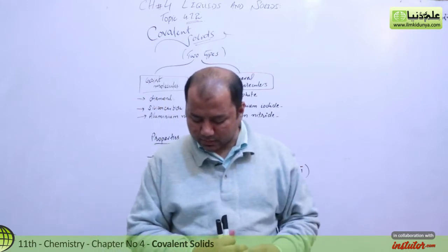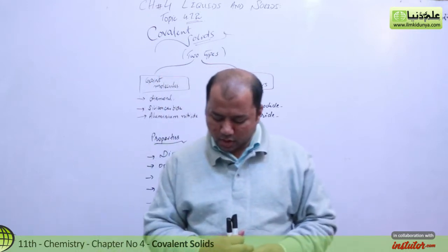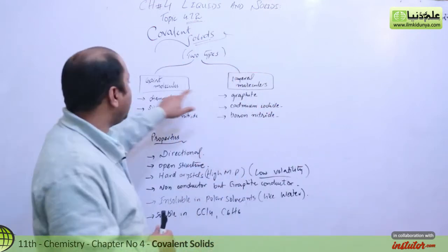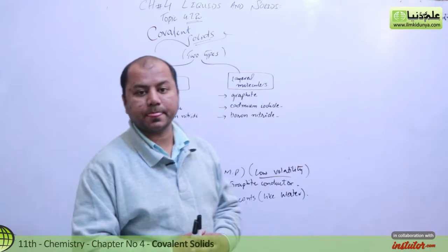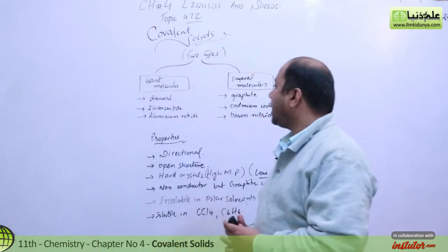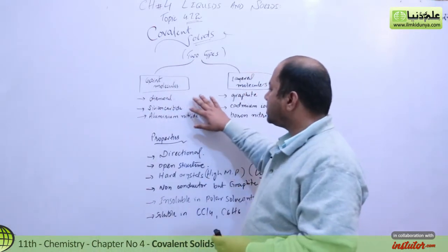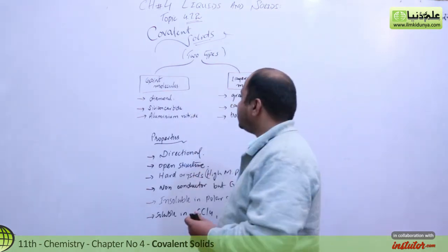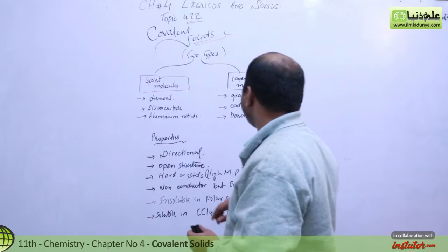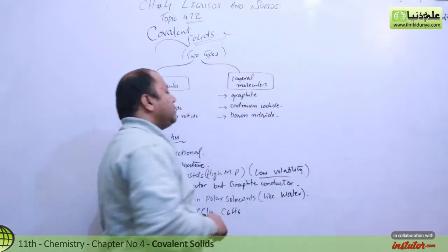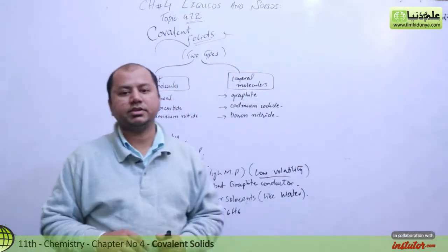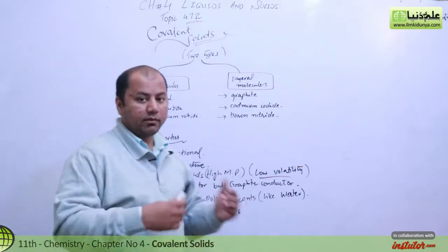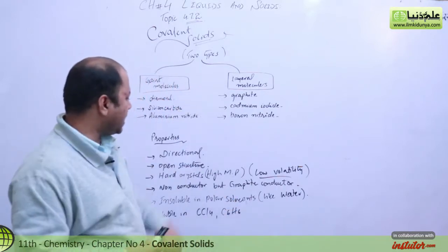These atoms are held together by covalent bonds. Covalent solids are of two types: giant molecules and layered molecules. Giant molecules include diamond, silicon carbide, and aluminum nitride as key examples. Layered molecules include graphite, cadmium iodide, and boron nitride as key examples.